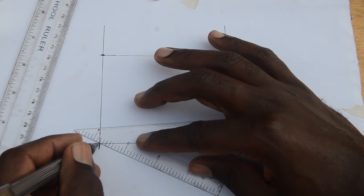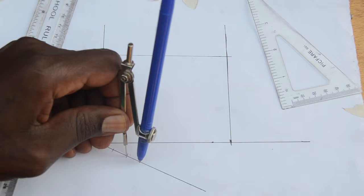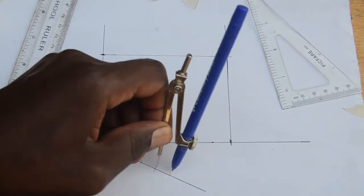Divide the span or the length into an even number of parts. This time I divide it into six.